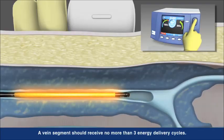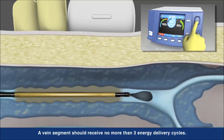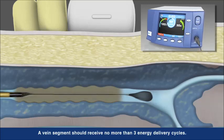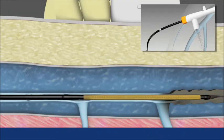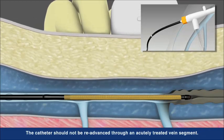Working together with the closure RFG generator, the catheter is designed to deliver controlled, consistent heat to each segment. After each segment is treated, unique shaft markings on the catheter aid proper repositioning to the next segment.